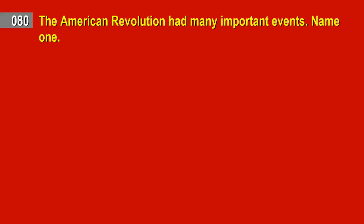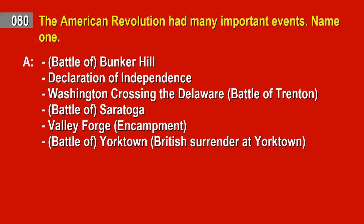Question 80. The American Revolution had many important events. Name one. Answer: Battle of Bunker Hill. Declaration of Independence. Washington crossing the Delaware. Battle of Trenton. Battle of Saratoga. Valley Forge encampment. Battle of Yorktown. British surrender at Yorktown.